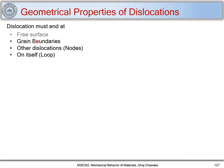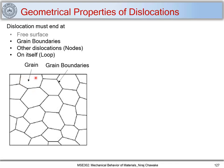Now let us look at dislocations that must end at grain boundaries. Here we have a grain and these are the grain boundaries. These dislocations are fine — they are ending at the grain boundaries. However, this dislocation cannot end inside a crystal, so this scenario is not possible. A dislocation has to end at grain boundaries or at a free surface. Since it was not ending at grain boundaries, that scenario can never be possible — it has to end at the grain boundaries.